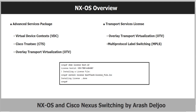The next feature is the advanced services package. It provides Virtual Device Context or VDC, Cisco TrustSec or CTS, and Overlay Transport Virtualization or OTV. The transport service license provides Overlay Transport Virtualization or OTV and Multi-Protocol Label Switching or MPLS.